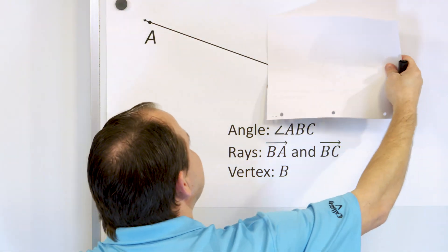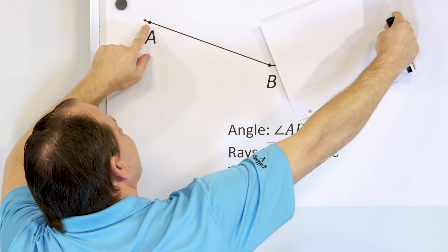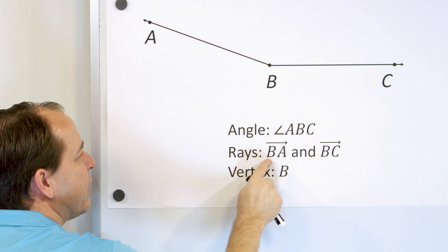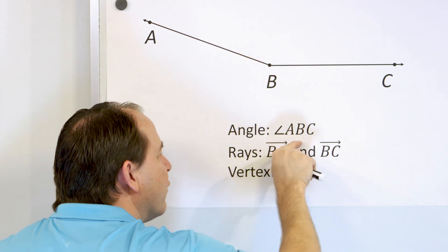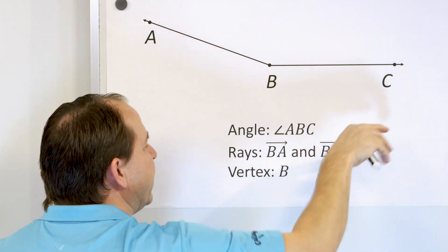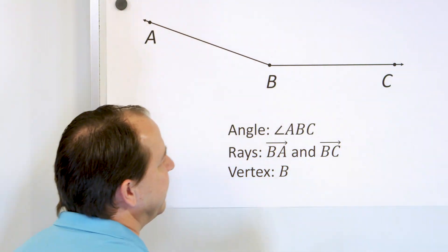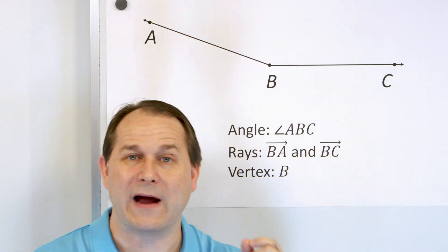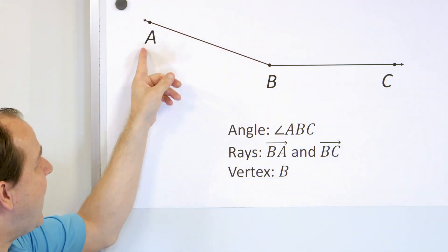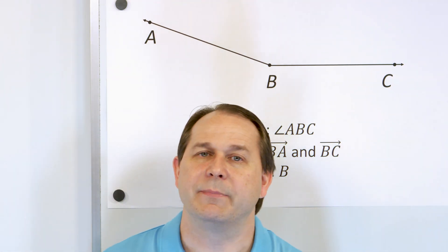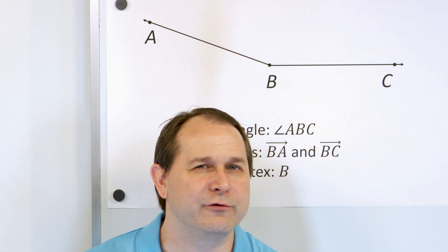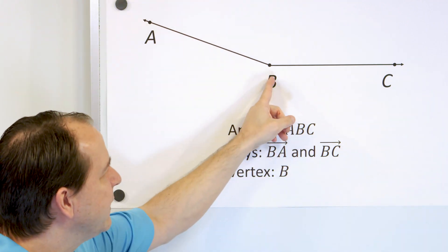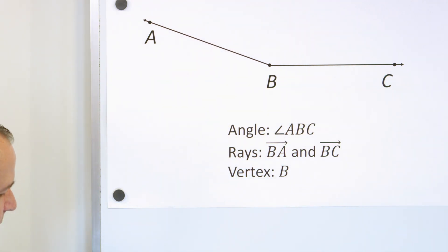We also have another ray on this diagram. It starts at B and travels through point A and goes on and on forever, so this ray is called BA. Notice the first letter is where the starting point is, and then the arrow travels over the other point it goes through. So BA goes this way, BC goes this way. A ray has to have at least two points — one starting point, and then it goes through the other point as well.